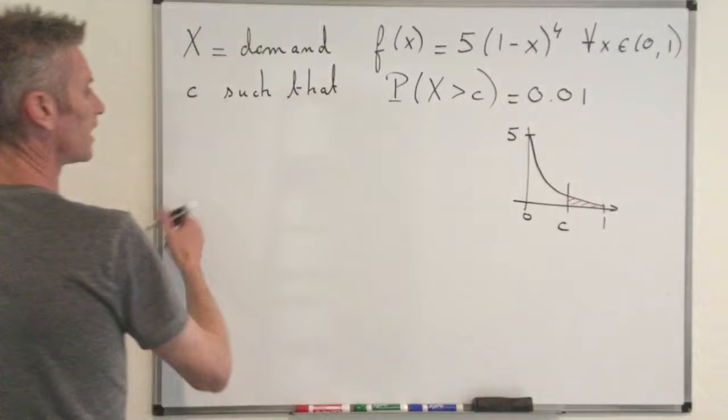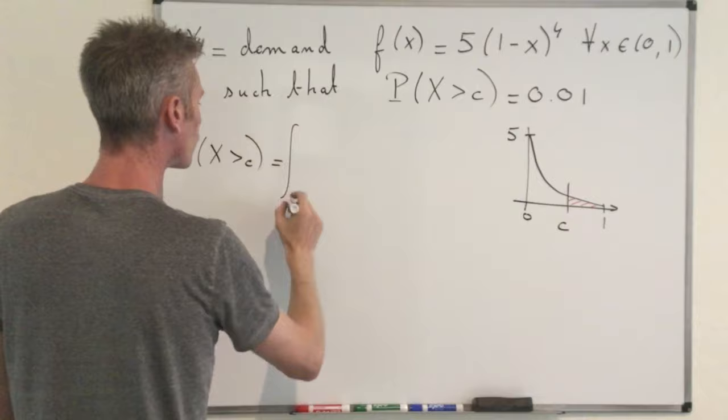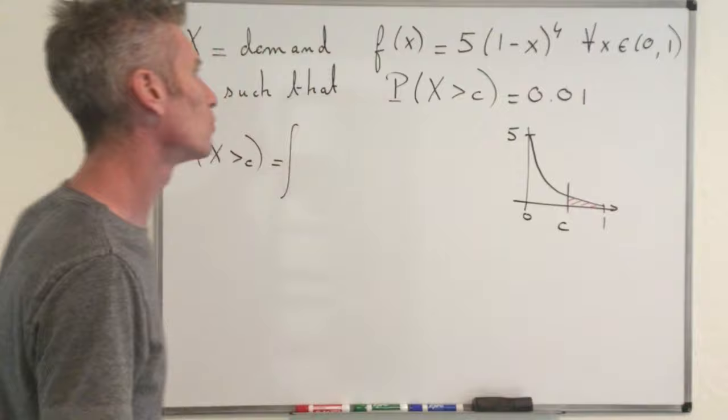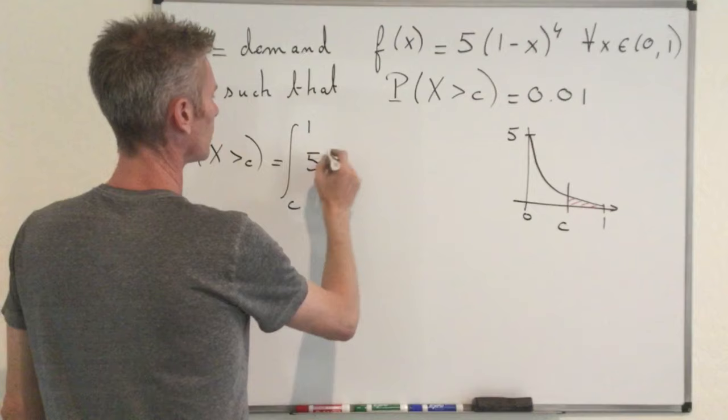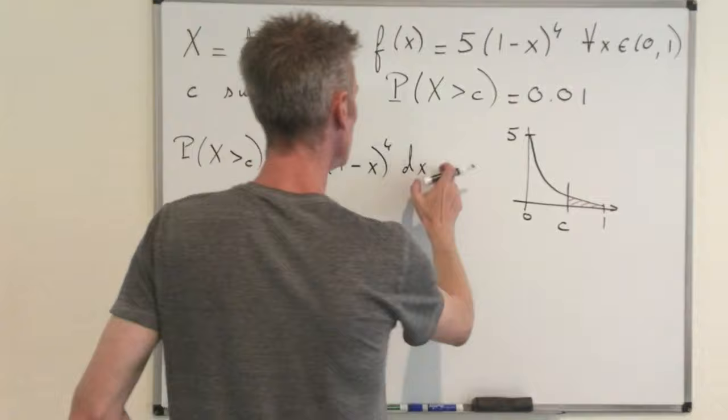So to answer the question, the probability that X is larger than C is just equal to the integral from C to infinity of that function, but we know that this function is equal to 0 for X larger than 1. So we can directly say that this is the integral from C to 1 of this function. Okay, so 5 times 1 minus X at the power 4 dx. Okay, by definition of the density function, that should be equal to 0.01.